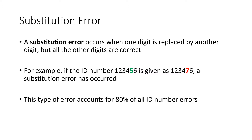So for example, our account number is 1, 2, 3, 4, 5, 6. And if when we're typing it in, we accidentally type 1, 2, 3, 4, 7, 6, then we've committed a substitution error. Instead of a 5 in that 5th position, we entered a 7. This is by far the most common type of error that happens with these ID numbers — 80% of all ID number errors are substitution errors.